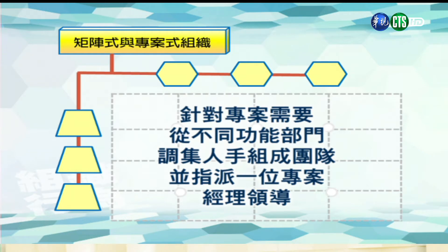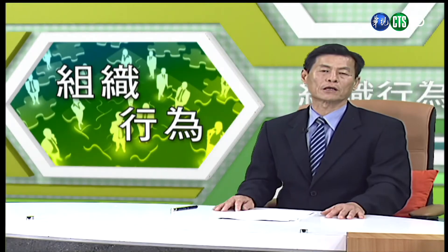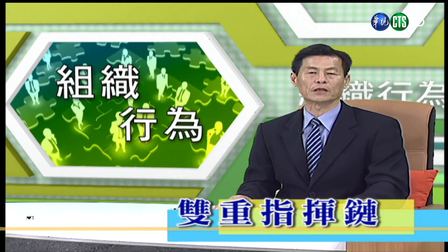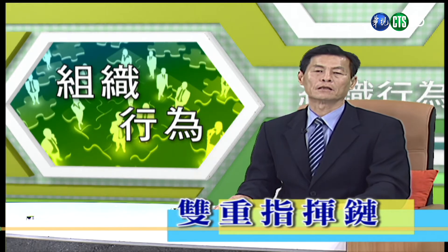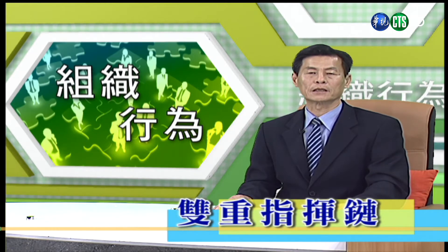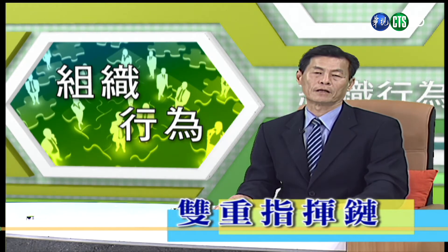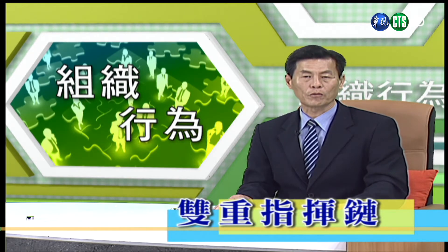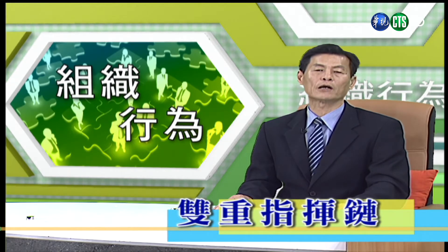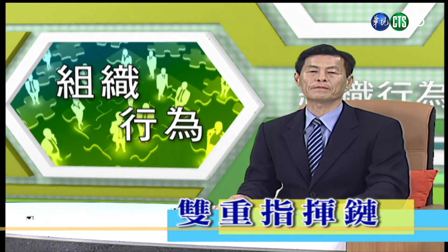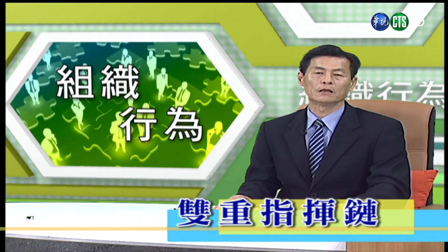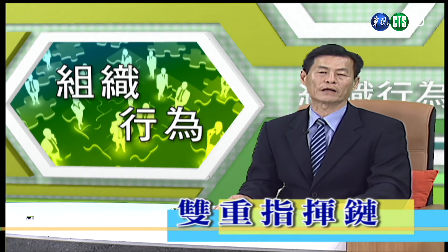第二项是矩阵式与专案式的组织。所谓矩阵式的结构是指组织会针对专案的需要，从不同的功能部门中调集人手来组成团队，并指派一位专案经理来领导。专案室的组织架构会造成所谓双重指挥链的结果，成员会有两个上司，分别为功能部门的经理与产品或专案部的经理。例如专案经理对调来的专案成员有指挥权，但有关升迁、薪资调整以及年度考核，通常由功能部门的主管来负责。